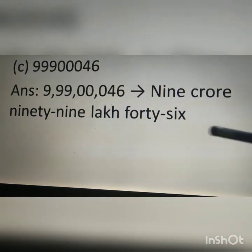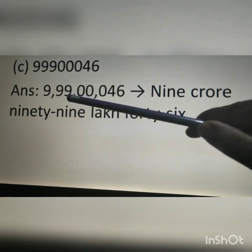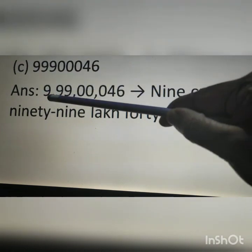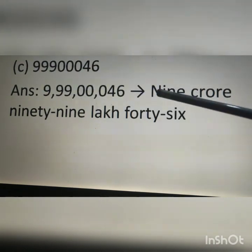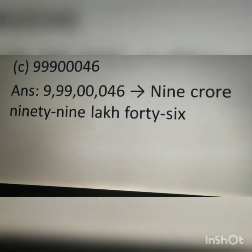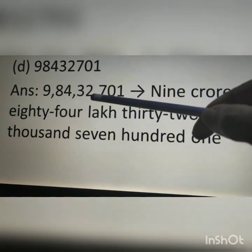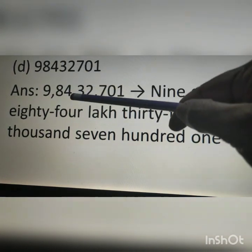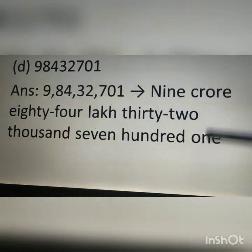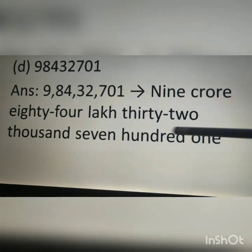Next question: after 3 digits comes the first comma, after 5 digits the second comma, and after 7 digits the third comma. We read it as 9,99,46,000. Next question: after 3 digits the first comma, after 5 digits the second comma, and after 7 digits the third comma. It is read as 9,08,43,27,01.